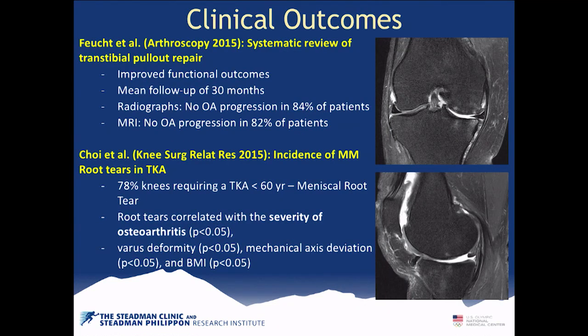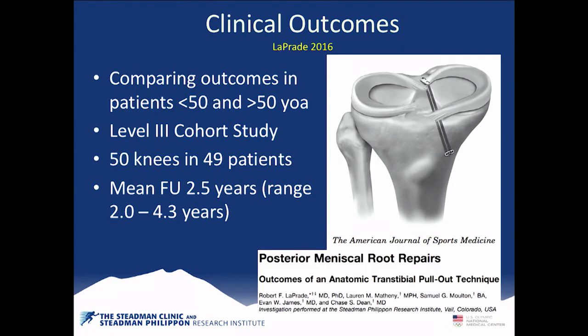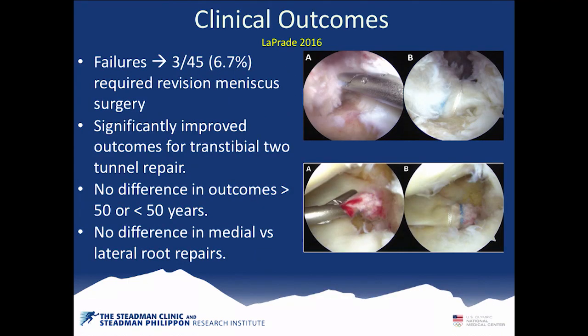Systematic reviews show these patients do well clinically. Importantly, one study showed that in patients less than 60 years old, 78% had a root tear that contributed to their arthritis — so root tears cause arthritis and may account for a higher number of total knee arthroplasties than we appreciated. In our own outcomes study of 50 patients, there was no difference between those less than 50 and older than 50, we had three failures with revision surgery performed, and overall they did very well — no difference in medial versus lateral tears and no difference in outcomes based on age.